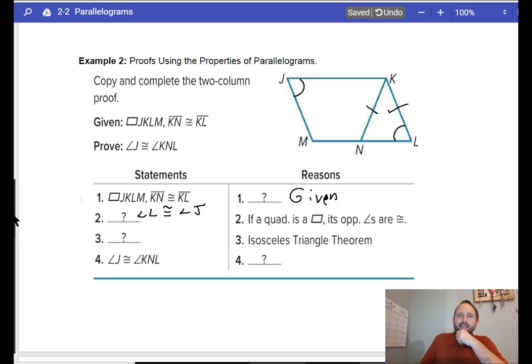Now, I'd probably say angle KNL. Where am I saying this? Because it's talking about isosceles triangle theorem. They're saying this side is congruent, or this angle is congruent to angle L. Because that's the isosceles triangle theorem.